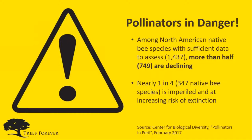So now we have the yellow flashing danger signal. We know pollinators are important, but why are they in danger? Many, many factors contribute to declining pollinator numbers, but we do know the numbers are declining. Among North American native bee species, more than half are declining and nearly one in four native bee species is imperiled and at increasing risk of extinction.